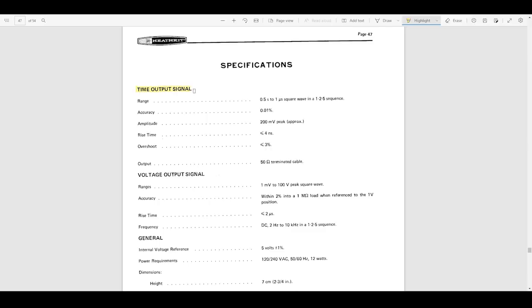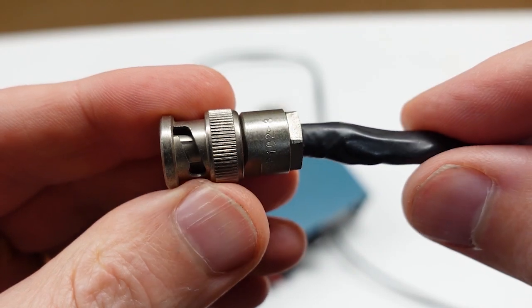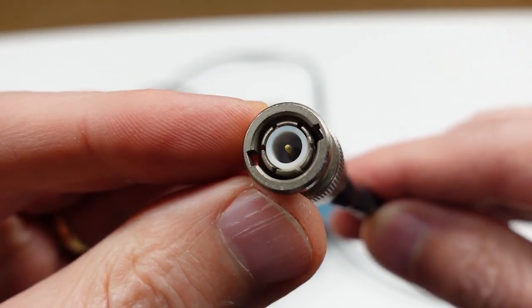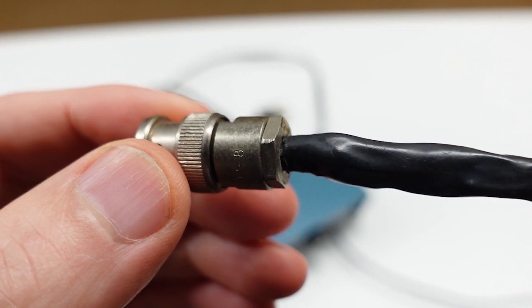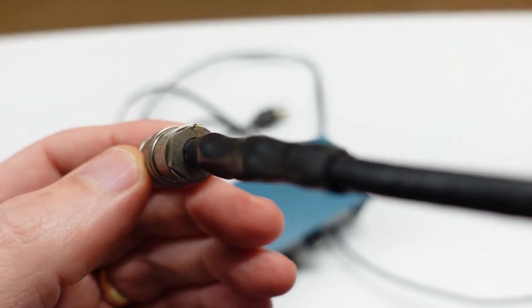It has two output signals. The first is a 200 millivolt square wave, and it's adjustable in 18 steps from a half second period to as fast as one microsecond. Or to convert that to frequency, that's from 2 hertz to 1 megahertz. Specified frequency accuracy is a decent plus or minus 0.01%, with an equally decent maximum rise time of 4 nanoseconds. This signal is provided on a short length of coax terminated in a male BNC connector with an internal 50 ohm load.